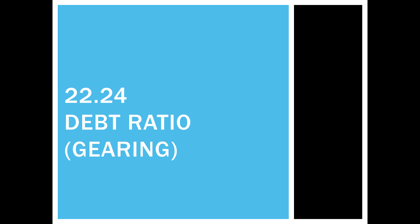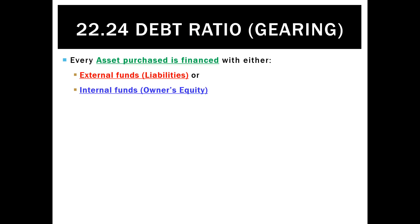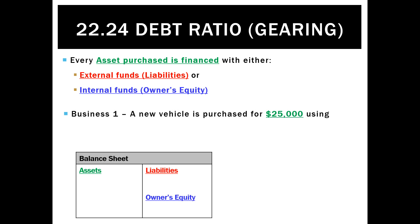The ratio we'll be using to look at the stability of a business is called the debt ratio or gearing. It's based on the concept that every asset bought by a business or a person is financed with either external funds, which we call liabilities or debt, or internal funds, which is called owner's equity.